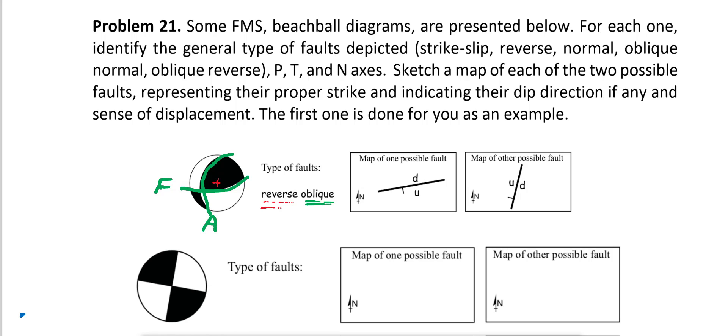I need to show the P, T, and N axes on the example we already discussed. Always the intersection of the fault plane and auxiliary plane is going to be null — N stands for null and that corresponds to Sigma 2. If we know Sigma 2, then we can find the profile plane. Sigma 1 and Sigma 3, or P and T, should plot along that dashed line. We have two planes and we find the midpoint.